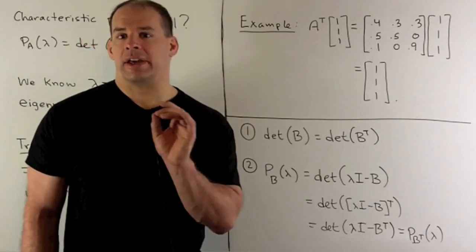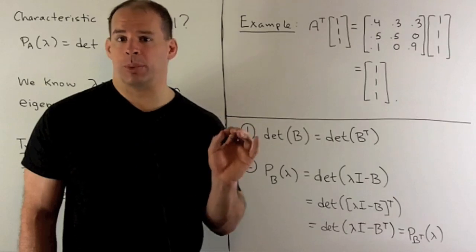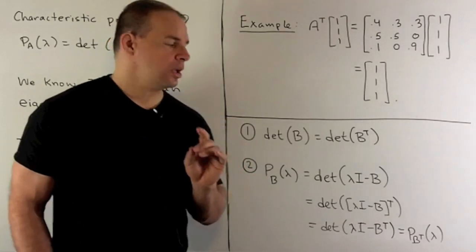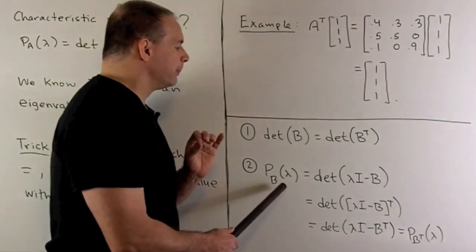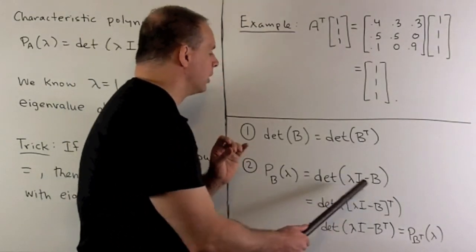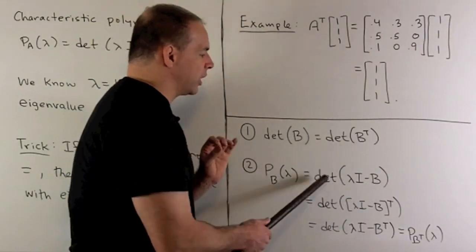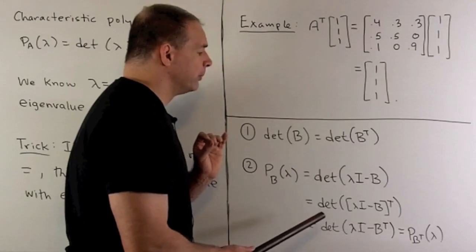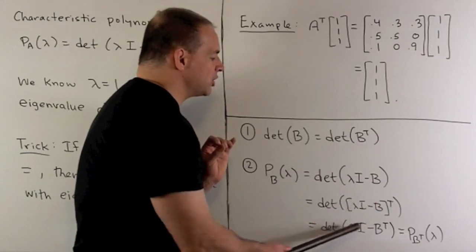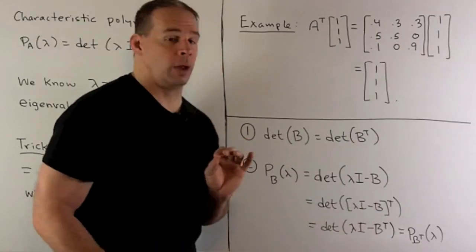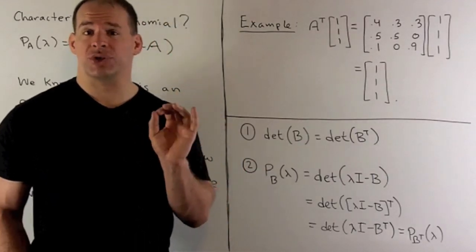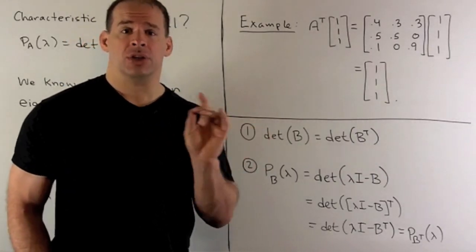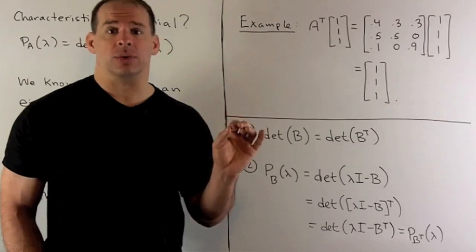Then, we just want to work out our characteristic polynomial for the transpose of the matrix. You'll note, if we take characteristic polynomial for B, we write it out. By part one, I can take the transpose and get the same answer. Then, I can distribute the transpose. And then, you note, we have the characteristic polynomial of the transpose of the matrix. So, the characteristic polynomials are the same. So, we'll have the same eigenvalues.